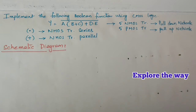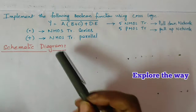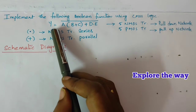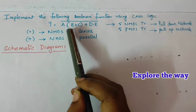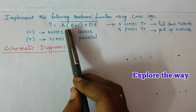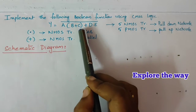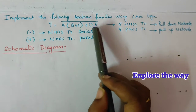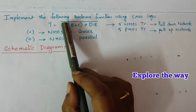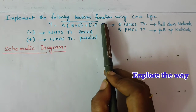In this video I am going to draw the schematic diagram for the given boolean function. The boolean function is y equal to a dot b plus c plus d e, whole bar.